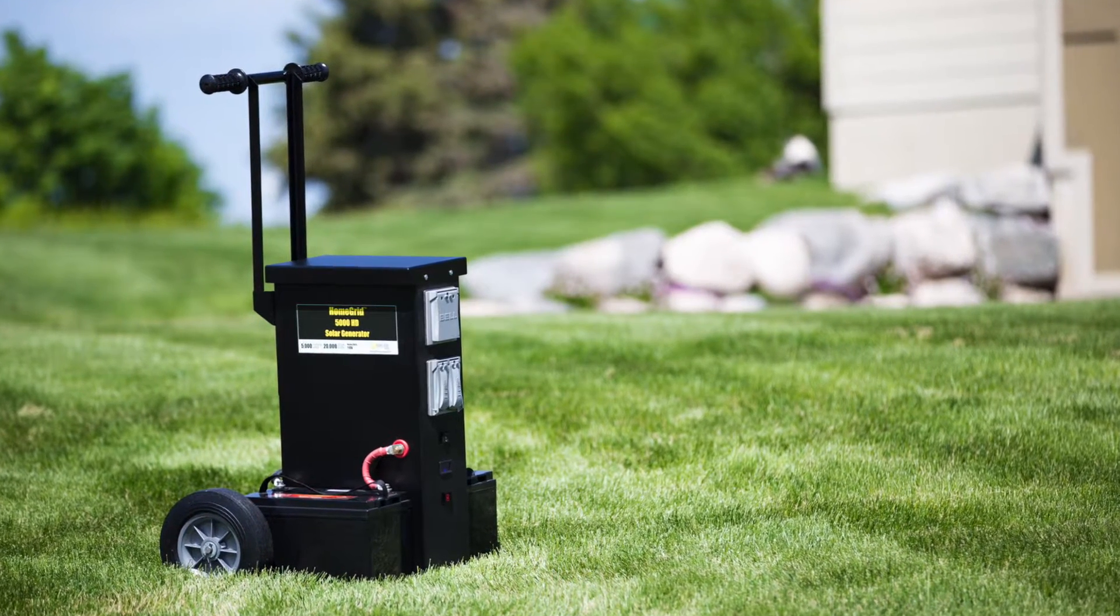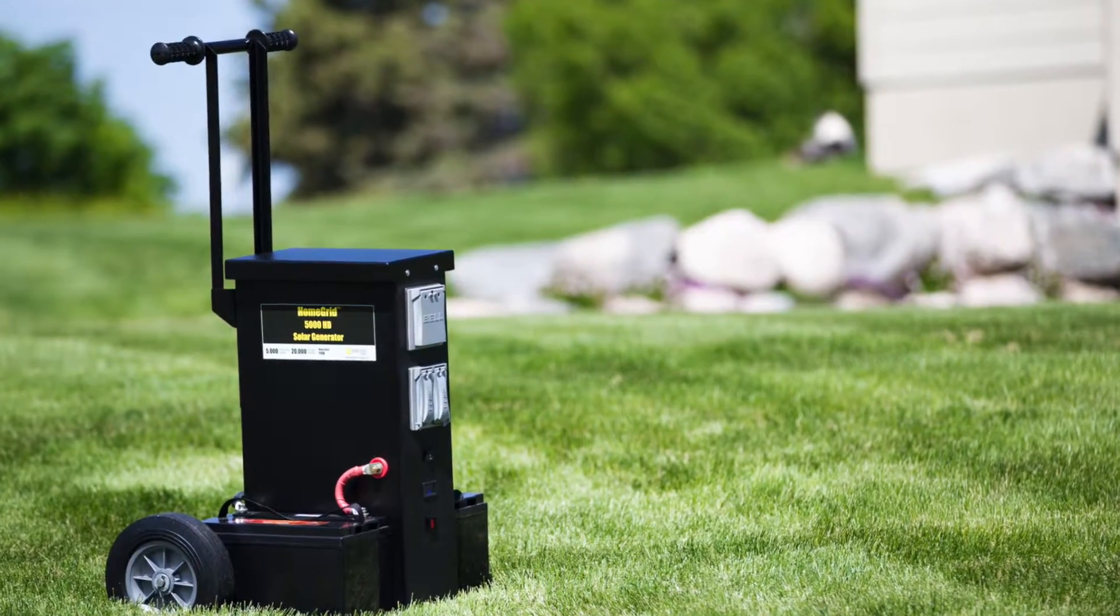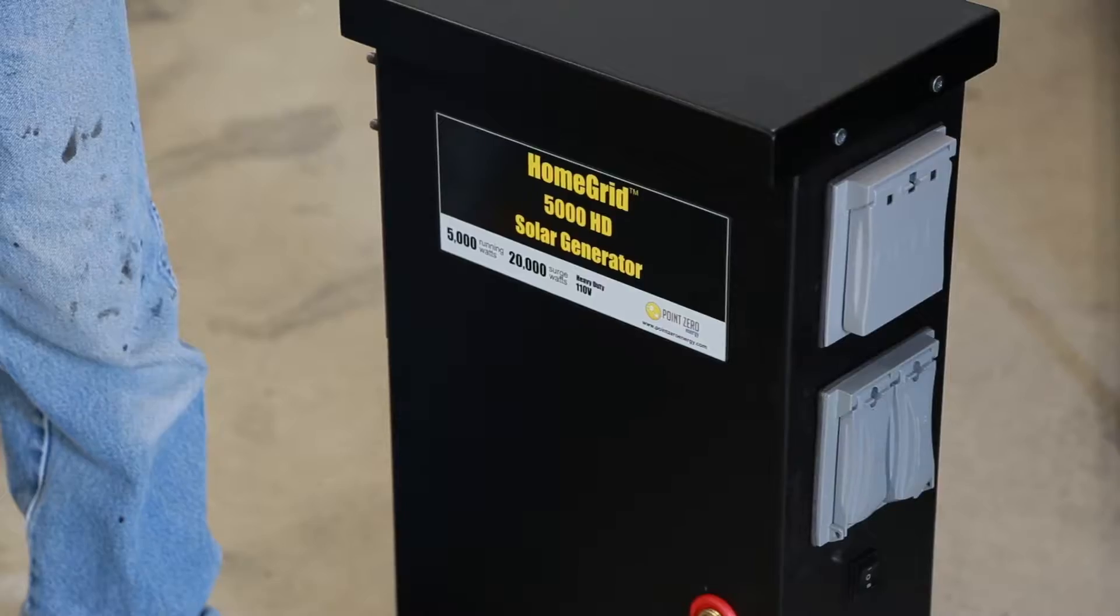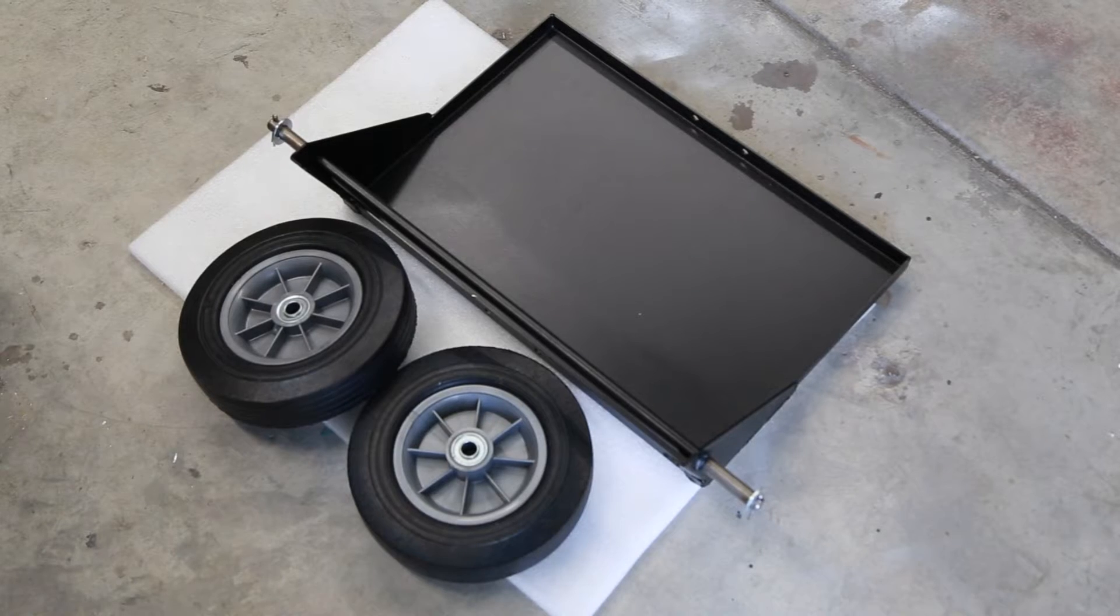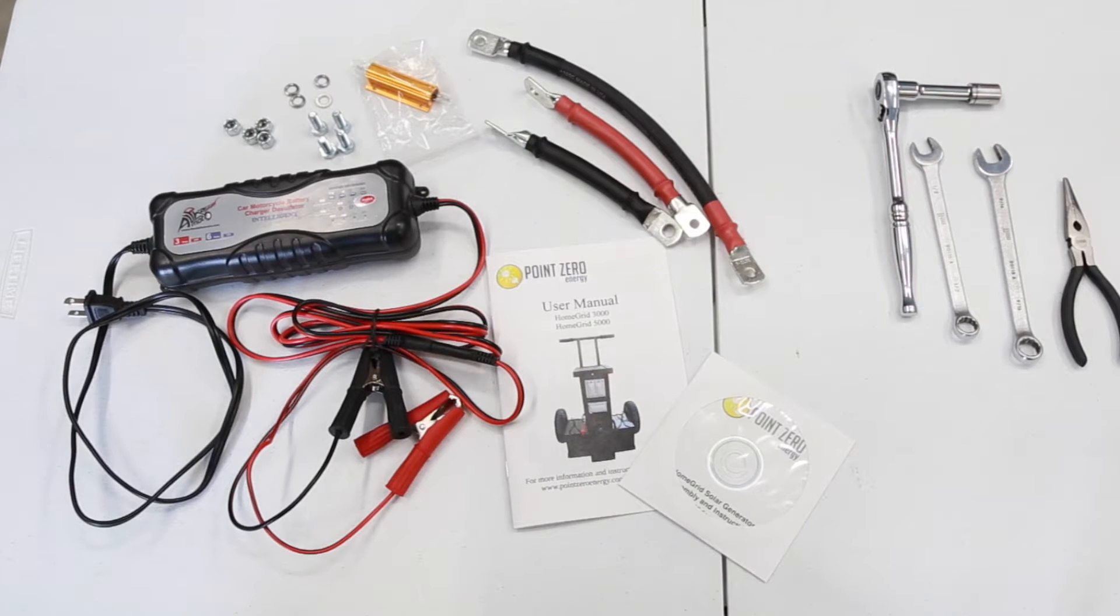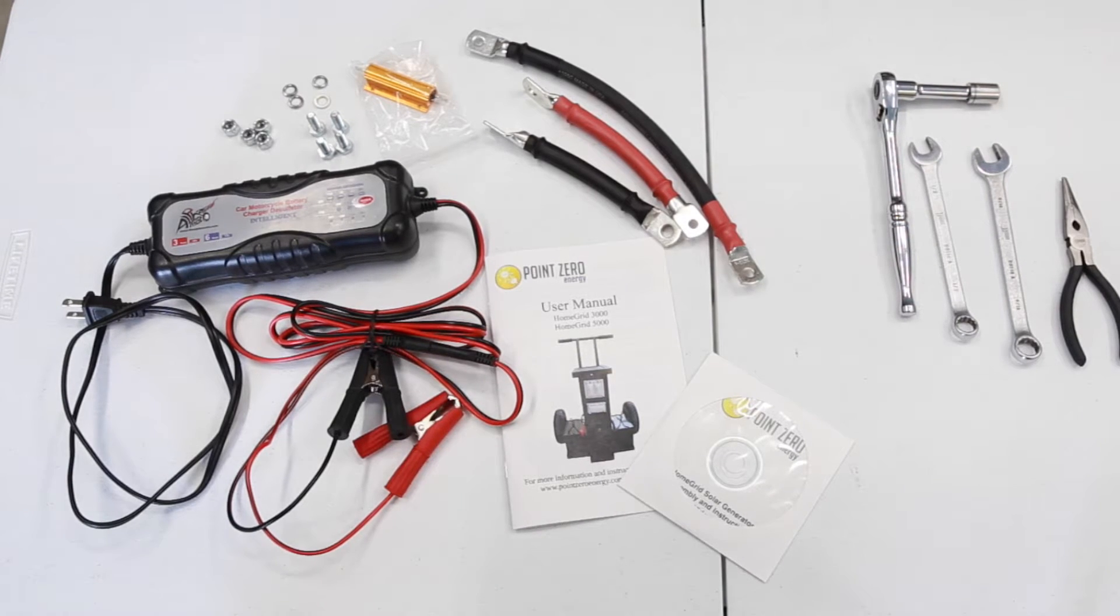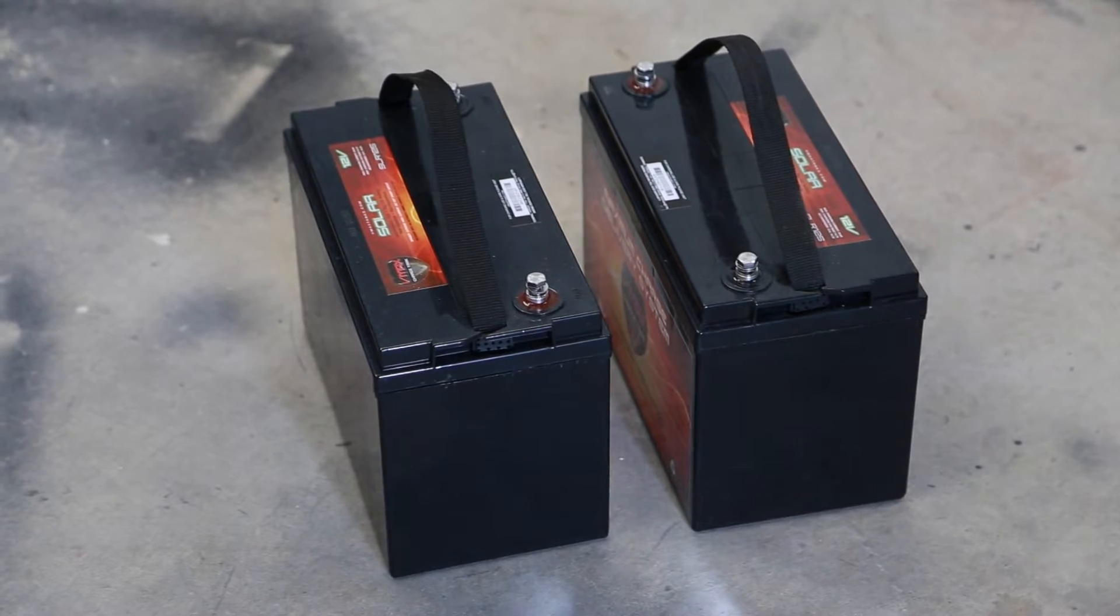When you purchase a HomeGrid 3000 or 5000 HD solar generator, it'll come with solar panels, the generator, a base plate with two wheels, four bolts, four nuts, four lock washers, a resistor, a battery charger maintainer, battery cables, an instructional manual, an instructional DVD, and two batteries.